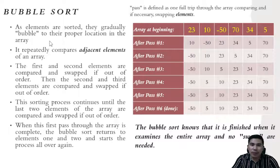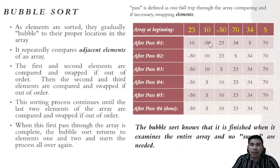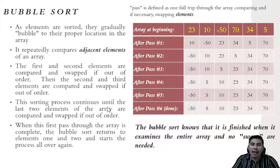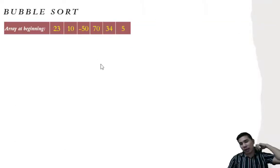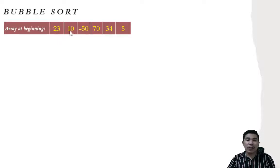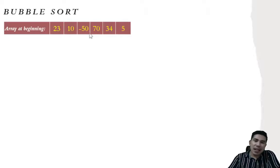In bubble sort, elements gradually bubble to their proper location in the array. It repeatedly compares adjacent elements: the first and second elements are compared and swapped if out of order, then the second and third are compared and swapped if out of order, and this process continues until the last two elements of the array are compared. Our example array is: 23, 10, -50, 70, 34, 5.